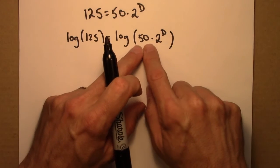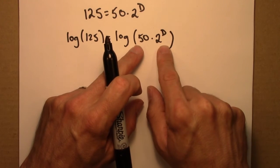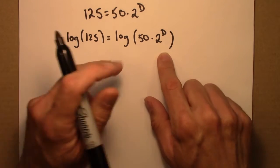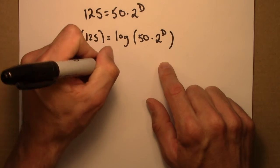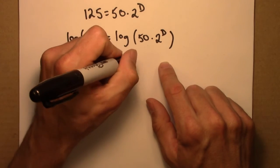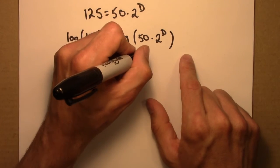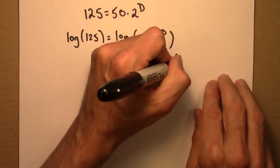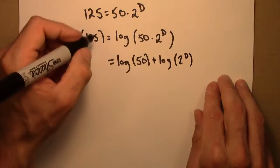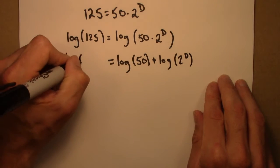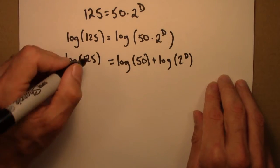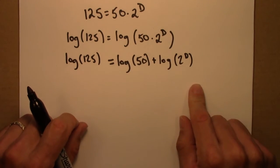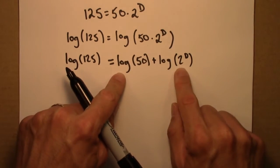Now notice over here, I've got 50 times 2 to the d. Remember that logs turn multiplication into addition. So the first thing I'll do here is simplify this. Log a times b is log a plus log b. I'm using that property here.